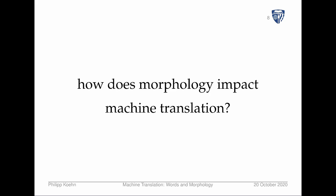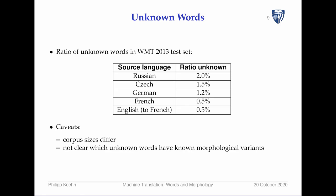After this crash course on morphology, let's think about how morphology impacts machine translation. One glaring example is how many unknown words appear in a test set — driven largely by morphology. In a standardized test set, English has only about 0.5% unknown words. Russian, however, is a much more inflected language, and the unknown word rate is significantly higher.